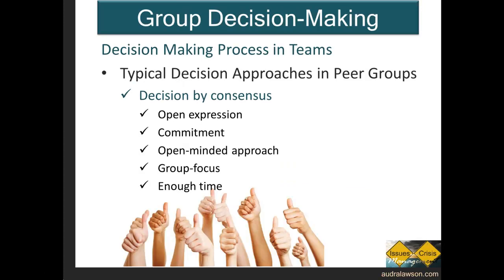First, we begin with teams where interactions are on relatively equal footing, and there are three big ways that decisions tend to be made in these types of situations. The first is decision by consensus, where all members have a part in shaping the decision, and all people in the group find it an acceptable means of accomplishing a mutual goal. This demonstrates a true commitment to group goals.